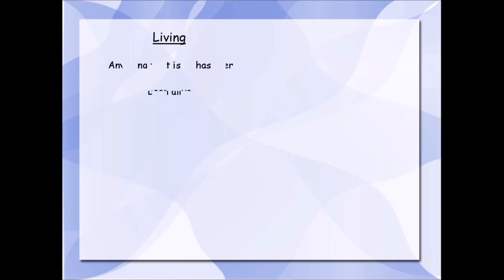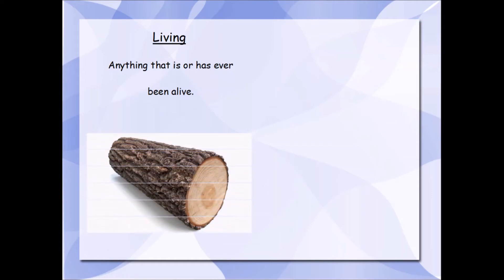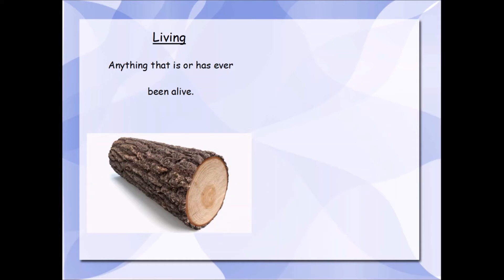Well, first of all, living things are anything that is or has ever been alive. So, something that is alive or has ever been alive. For example, a log. This log used to be a tree. It was part of a tree. Now it's dead. But it was alive. So we consider it as a living thing.